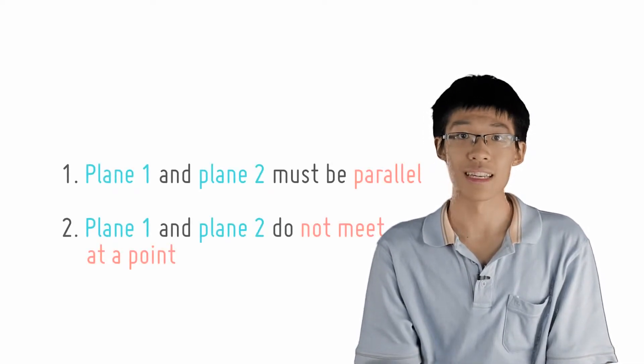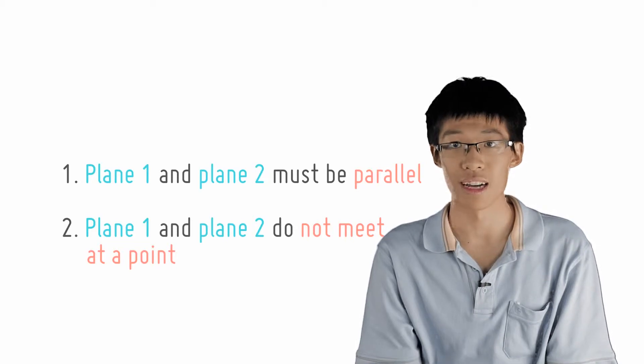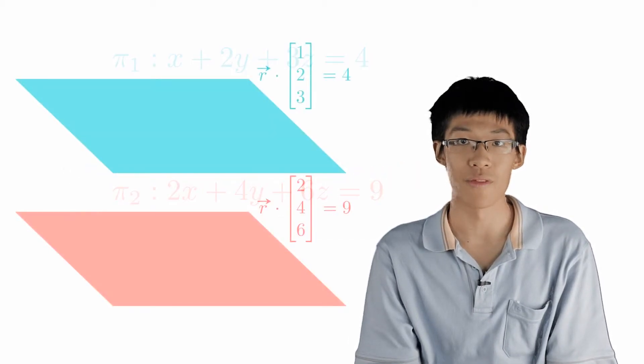We want to show that these two planes do not intersect. Firstly, we need to show that the planes are parallel, which means that their normal vectors are parallel.